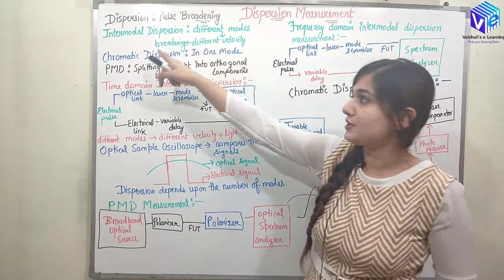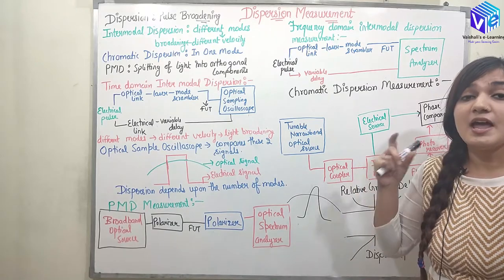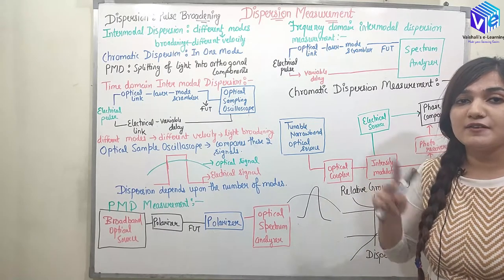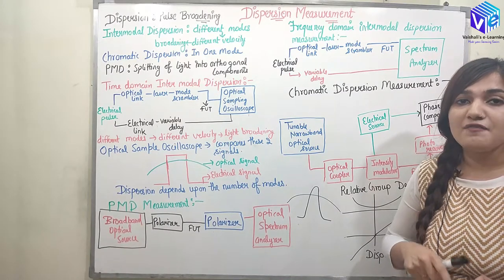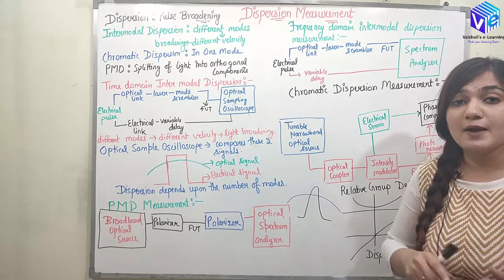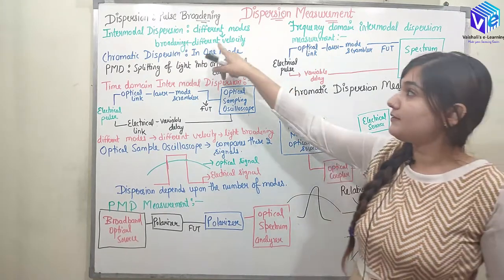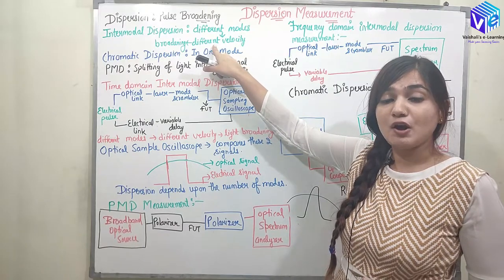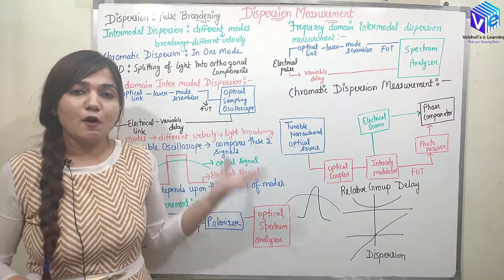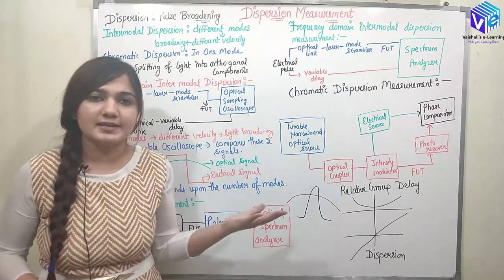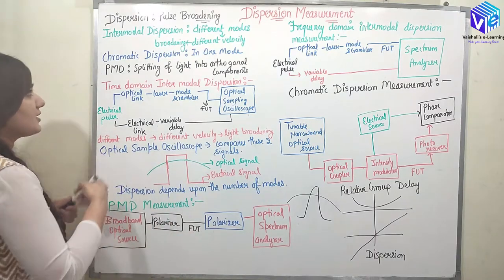Now coming to the different types of dispersion. First we have intermodal dispersion. As the name suggests, it is dispersion between the different modes. We know we have different modes as different frequencies, and these different modes propagate inside the fiber with different velocities. When they propagate with different velocity, at the receiver they cause the effect of pulse broadening — that is intermodal dispersion.